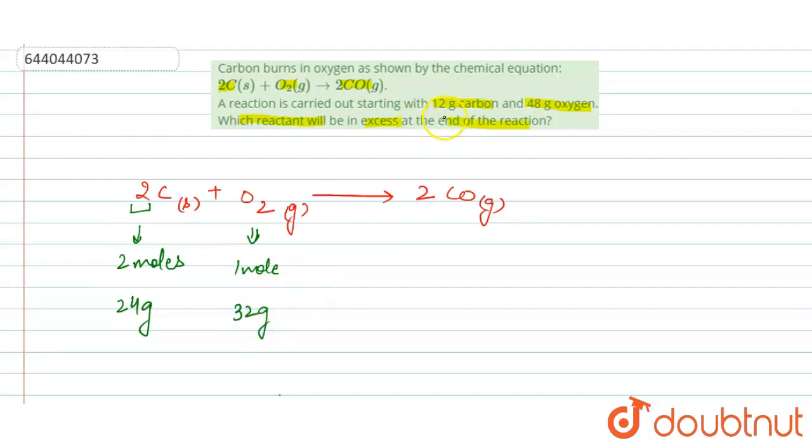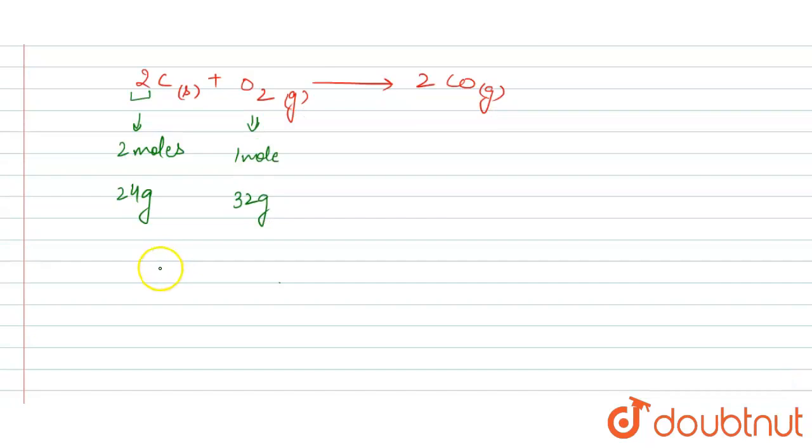In the question 12 gram of carbon and 48 gram of oxygen is given to us. So according to the reaction, 24 gram of carbon needs 32 gram of oxygen.